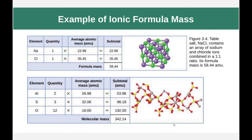It doesn't always have to be so clean. Aluminum sulfate has a very complex structure, but still there is a base repeating unit — a certain proportion of the elements. You'll see there are two aluminums for every three sulfurs and every twelve oxygens. We multiply each by their atomic masses and add them together to get 342.14 AMU.